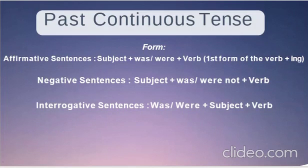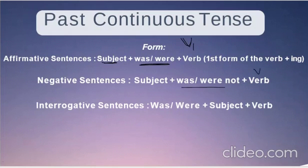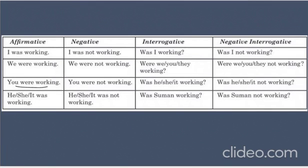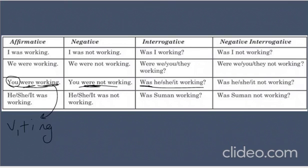Past Continuous Tense is something in the past that was still going on. Affirmative: Subject + was/were + V1+ing. Negative: Subject + was/were + not + V1+ing. Interrogative: was/were comes first, then subject, then V1+ing. Examples: 'You were working,' 'You were not working,' 'Was he working?' Here 'you' is the subject, 'were' goes in the middle, and 'working' is V1+ing.